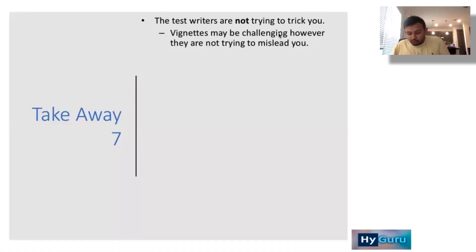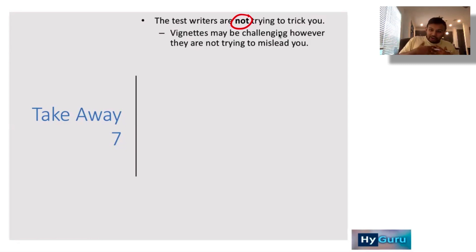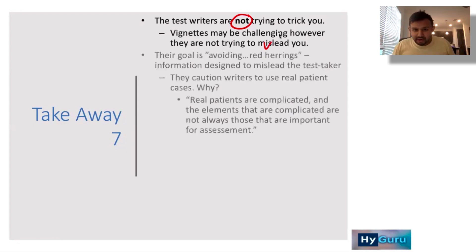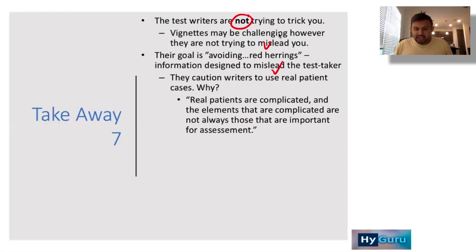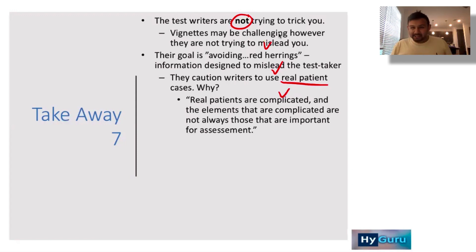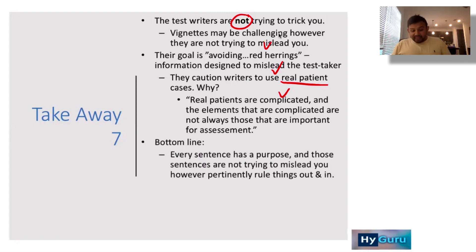Takeaway number seven: the test makers are not trying to trick you. This is a standardized exam — what you study in Atlanta is the same as what someone studies in Ohio or India. Vignettes may be challenging, but they are not designed to mislead. The NBME actually avoids red herring information. Real patients are complicated, and complicated cases are not ideal for assessment, so questions are designed to be straightforward critical thinking exercises.